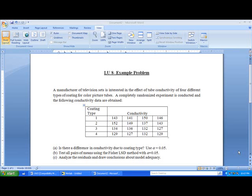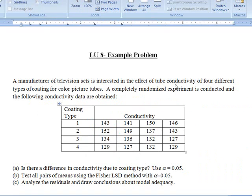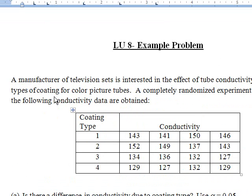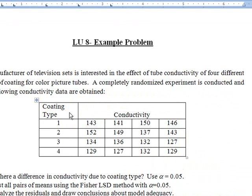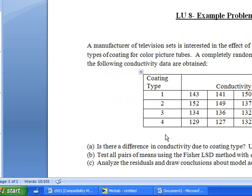Hi students, today I will explain a problem that is shown here. A manufacturer of television sets is interested in the effect of tube conductivity of 4 different types of coating for color picture tubes. A completely randomized experiment is conducted and the following conductivity data are obtained. The manufacturer is interested in knowing the conductivity values at each coating type and wants to know whether these values differ for different coating types.